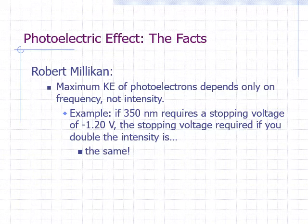Remember that the stopping voltage tells us what the kinetic energy of the most energetic photoelectrons are. A stopping voltage of negative 1.20 volts means that the most energetic photoelectrons have a kinetic energy of 1.20 electron volts. This observation was puzzling.